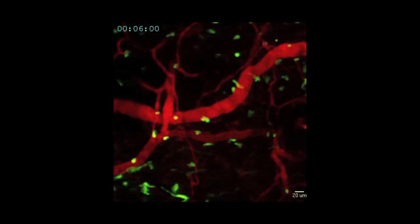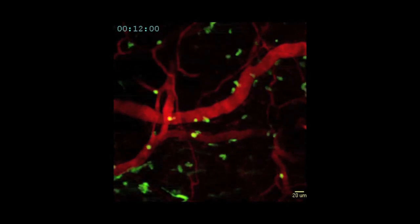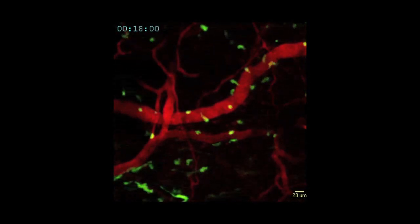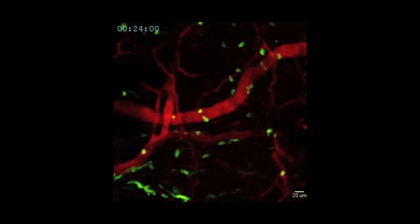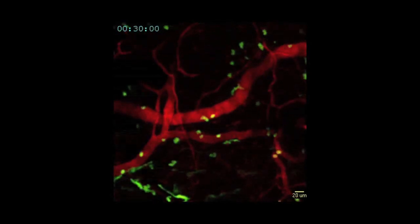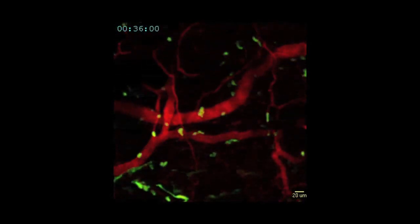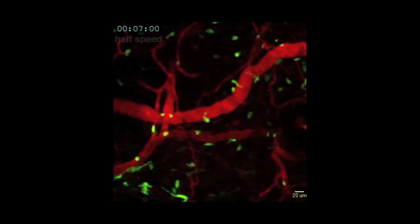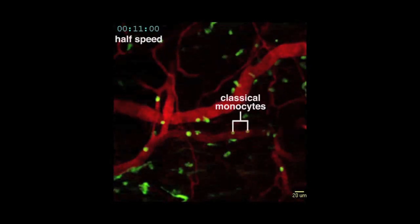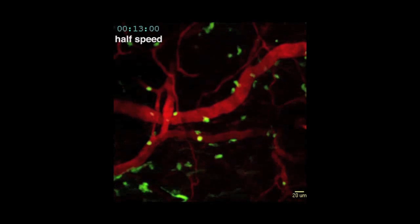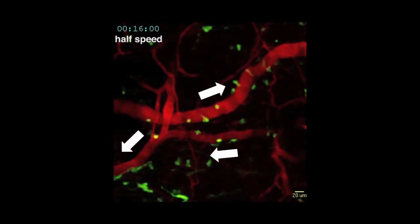Played at this speed, the video condenses 47 minutes into 15 seconds and allows us to observe both classical monocytes and patrolling monocytes as they move along the endothelium within the arteries. When we repeat the video at half speed, note how the classical monocytes roll rapidly along the endothelium in the direction of the blood flow.